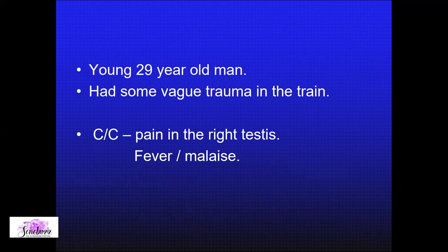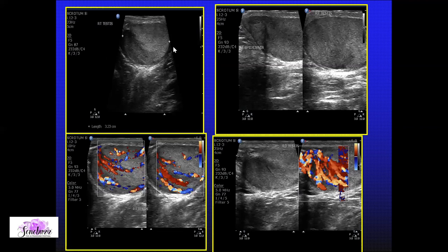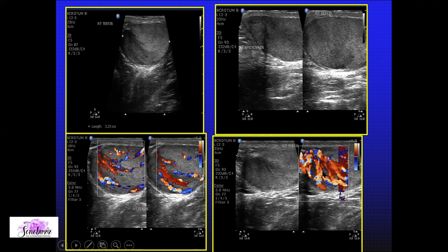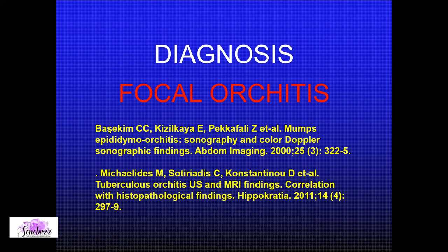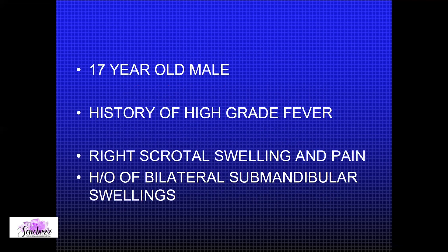A close friend presented with vague trauma and severe pain in the right testis with malaise and fever. The testis showed hypoechoic areas — at first glance most likely to be diagnosed as a segmental testicular infarct. His epididymis was normal, but when we switched on color Doppler, this hypoechoic ill-defined area showed increased vascularity. Putting all together, this is nothing but focal orchitis. He came back after four weeks of antibiotics and the lesion had completely disappeared.